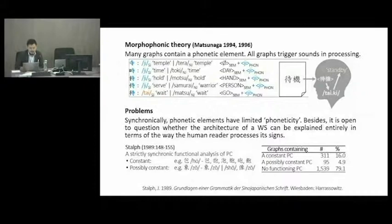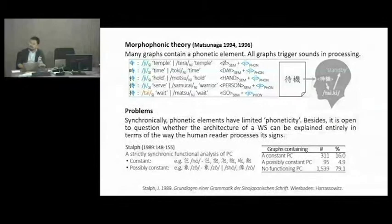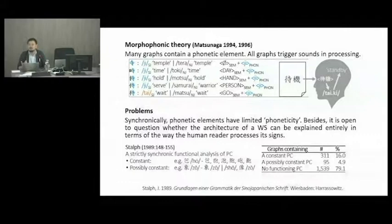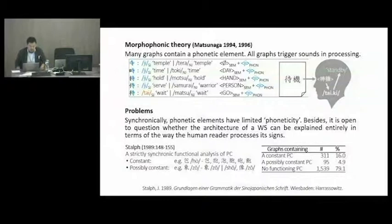Let me proceed to the second theory, morphophonic theory. Basically, Matsunaga is saying that many graphs contain a phonetic element and all graphs trigger sounds in processing. The element highlighted in blue can be an independent graph by itself or an element within a number of other graphs. When it is contained in a complex graph, it indicates the Sino-Japanese reading, ji. However, this is not always the case — the last graph is read as tai rather than ji, so the phonetic element doesn't work in that particular graph.